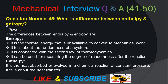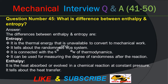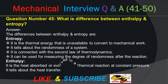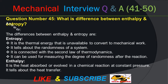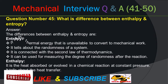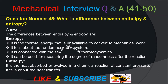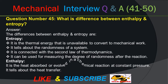Question number 45: What is the difference between enthalpy and entropy? Answer: Entropy is the thermal energy that is unavailable to convert to mechanical work; it tells about the randomness of a system. Entropy is connected with the second law of thermodynamics and can be used for measuring the degree of randomness after a reaction. Enthalpy is the heat absorbed or evolved in a chemical reaction at constant pressure. Enthalpy tells about the heat transfer and is associated with the first law of thermodynamics.